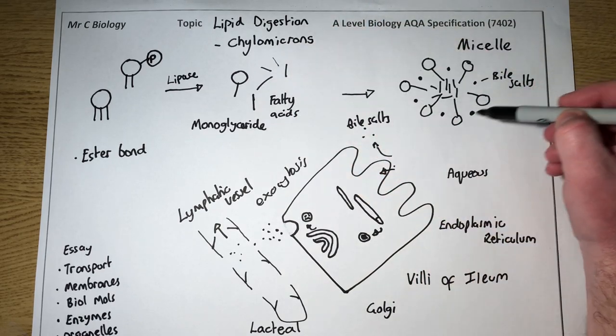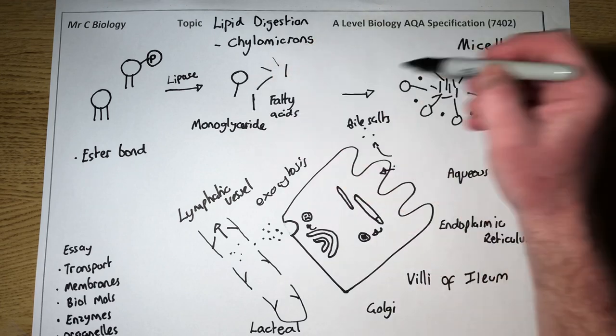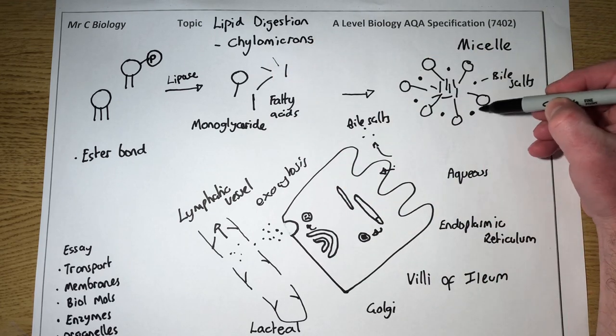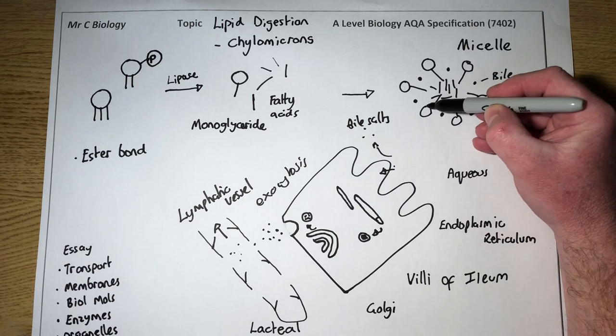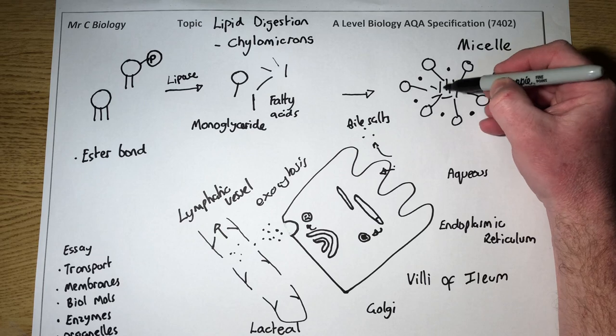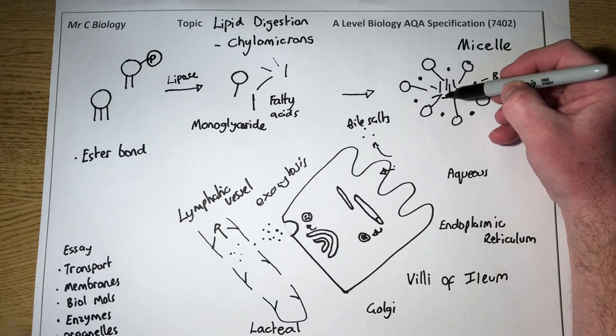In an aqueous environment in the digestive system, these reform into structures called micelles. They're associated with bile salts, and then around the outside we've got the monoglycerides, and in the center we've got the fatty acid tails.